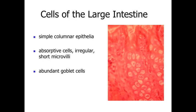Looking at the cells of the large intestine: we still see a simple columnar epithelium, with absorptive cells along the surface having irregular, relatively short microvilli — still involved with absorbing water added to the digestive system, though not absorbing nutrients. There are also many abundant goblet cells, because we are compacting waste materials into feces, which has the potential to abrade the epithelial lining.